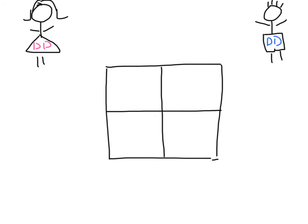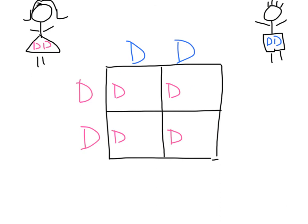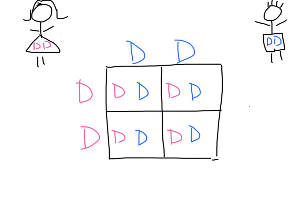Then we might pose the question: does it matter whose gametes are up here and whose gametes are over here? It doesn't matter. I always use the top and this side, but you can use either orientation. Because the beauty of the Punnett square — so can we put mom here and dad here, and does it change anything? No, it doesn't. Because when we build our Punnett square and pull the Ds over to each square and pull the blue Ds down, we get all homozygous dominant — 4 out of 4, or 100%.